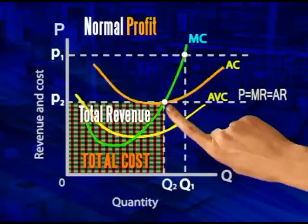At a selling price of P2, the firm is making normal profits and the owner is earning the salary that he or she would have earned working for someone else.